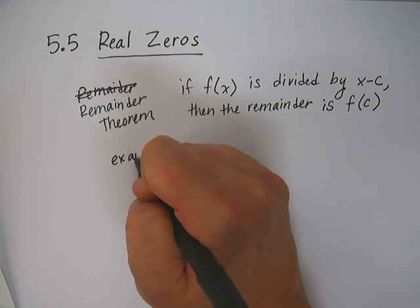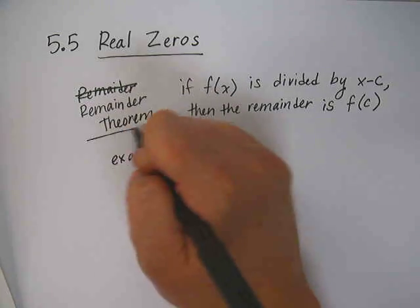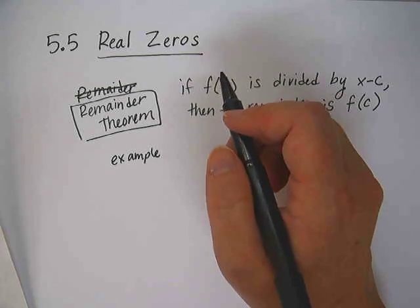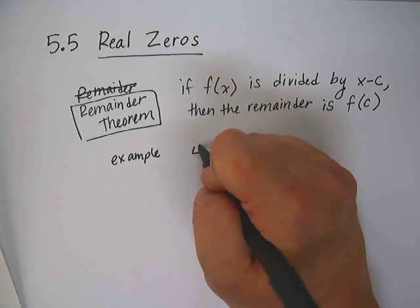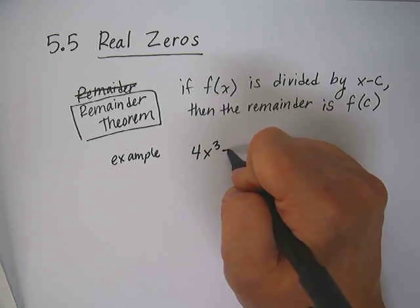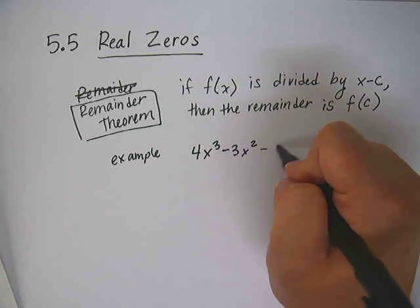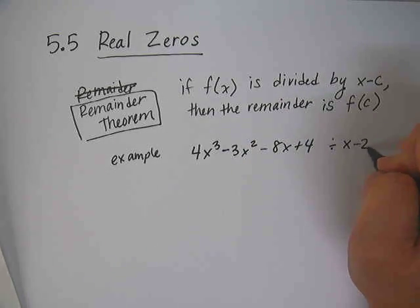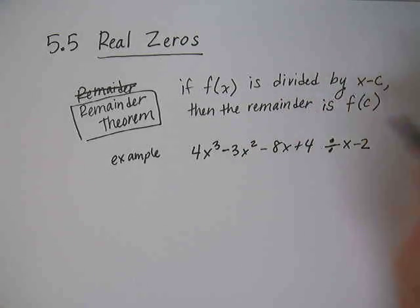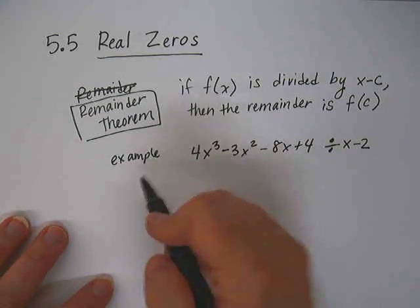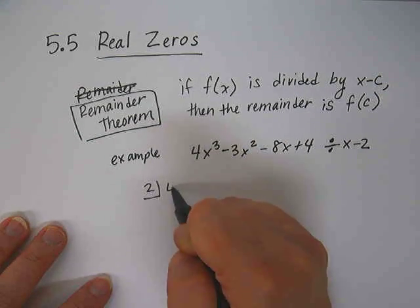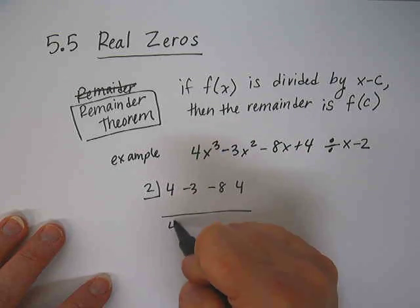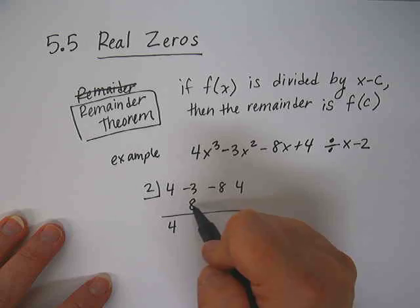Okay, so for example, if I'm using the polynomial function 4x cubed minus 3x squared minus 8x plus 4, and we're dividing that by x minus 2, I can of course just do synthetic division. So, 4, negative 3, negative 8, 4. Bring down the 4.